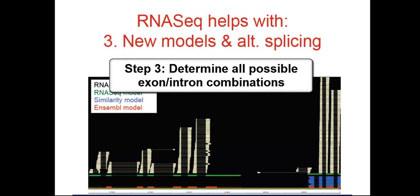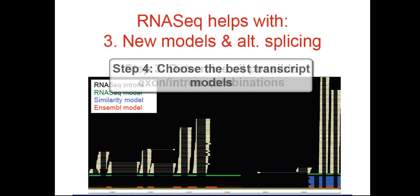Finally, we use the introns to build all possible exon-intron combinations, and then we filter the potential isoforms down to only the best supported model. It's this model that's used in the gene build.